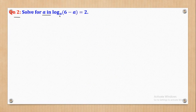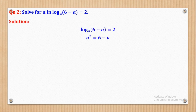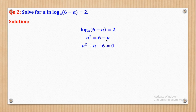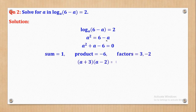Question 2: solve for a. From the given equation, form a quadratic in a squared. Factorizing gives (a plus 3)(a minus 2) equals 0, so a equals negative 3 or a equals 2.